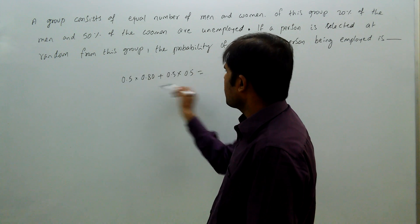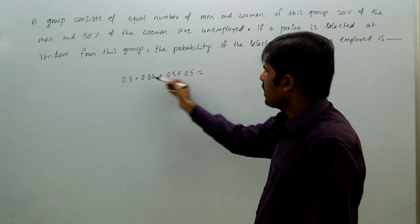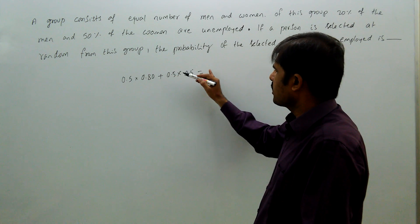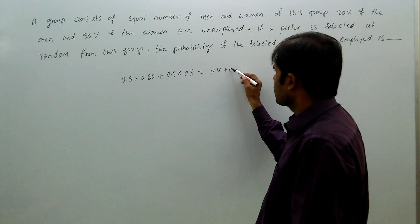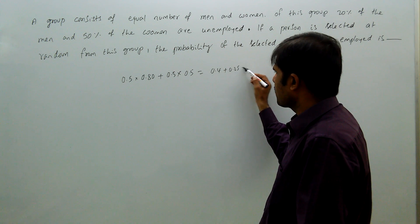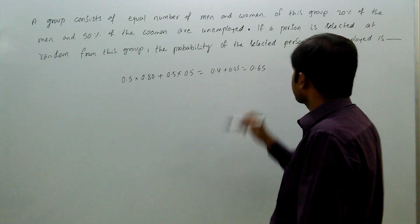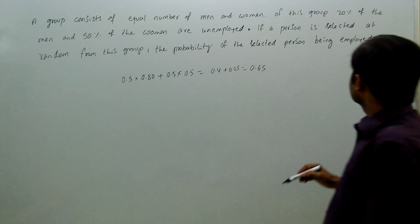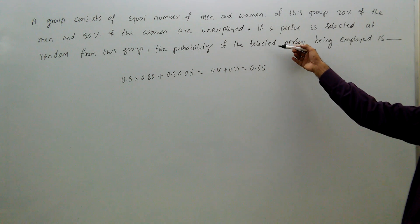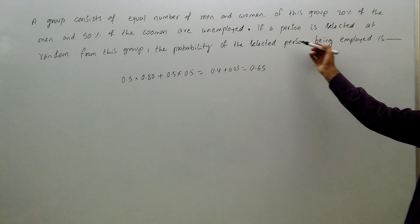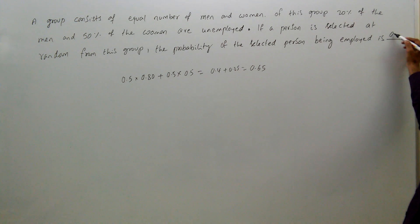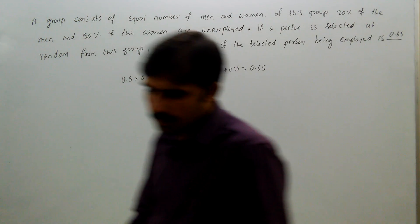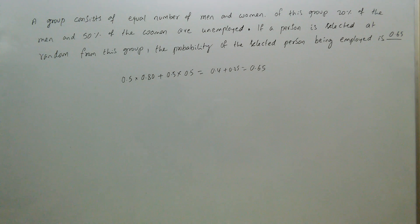So, the employed percentage is: 0.5 × 0.8 + 0.5 × 0.5 = 0.4 + 0.25 = 0.65. So, if you select a person from the group, the probability of the selected person being employed is 0.65.